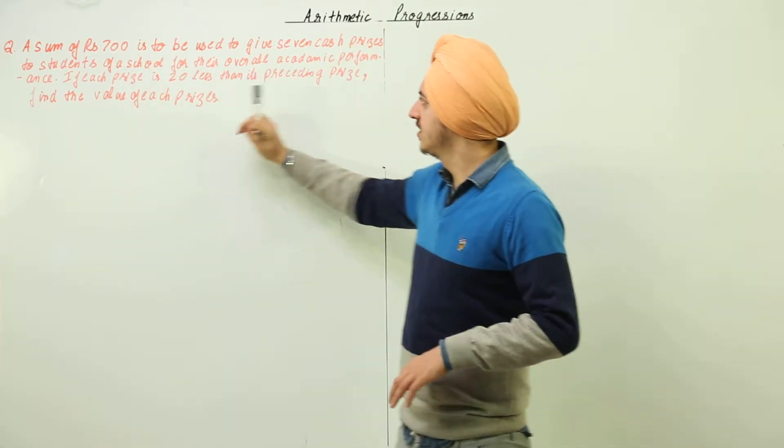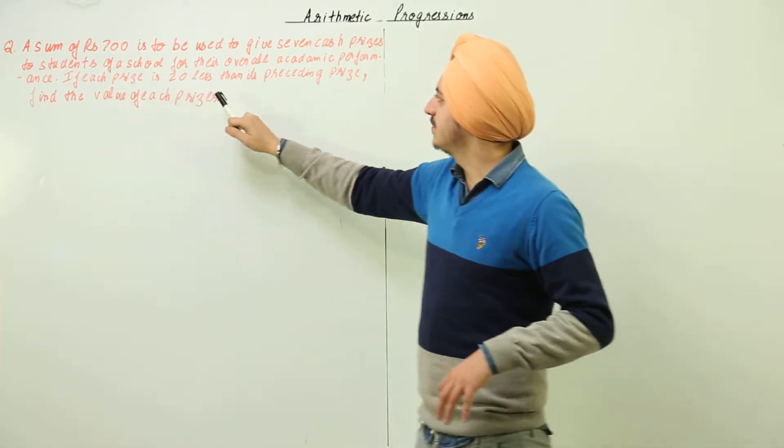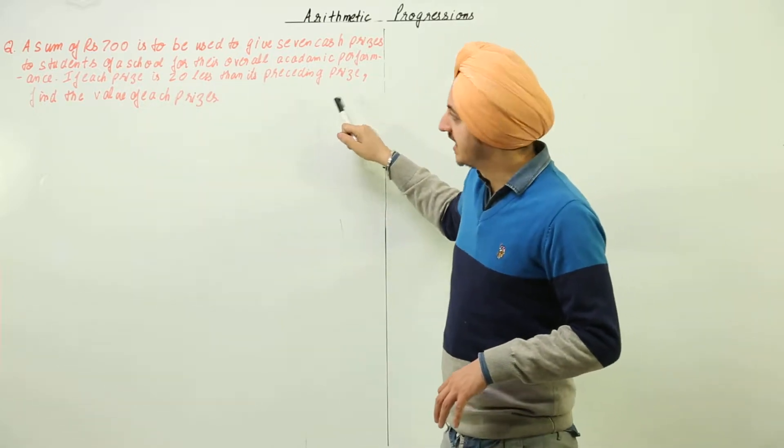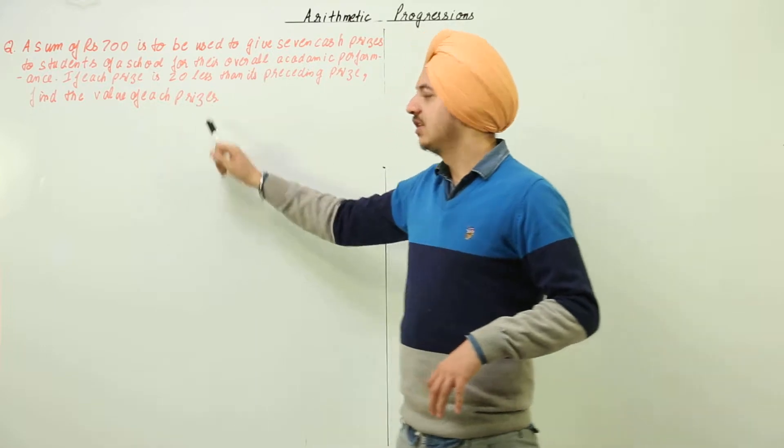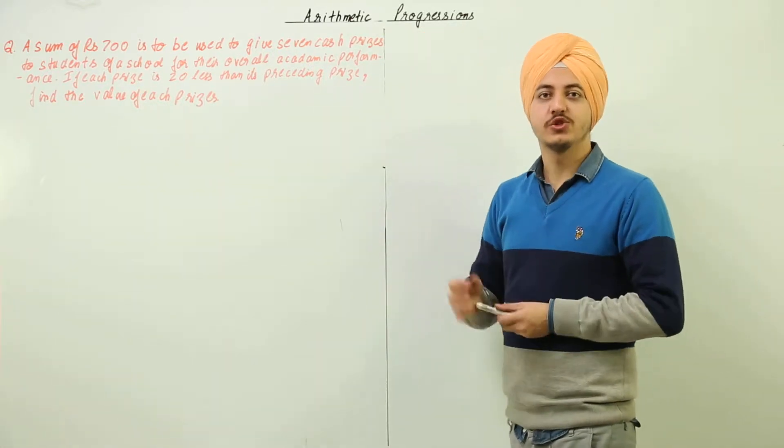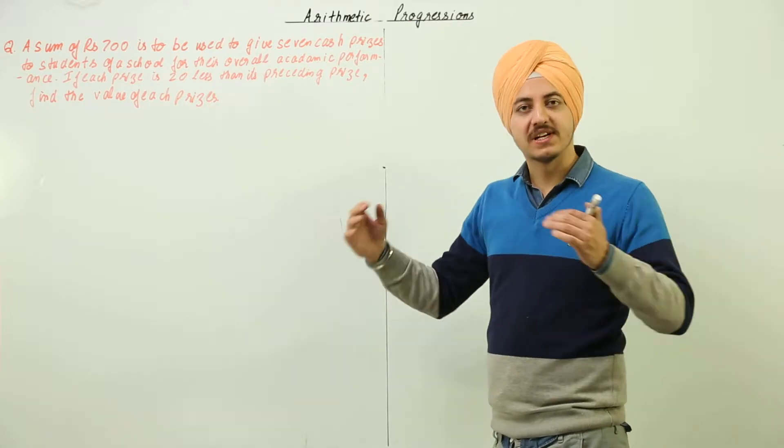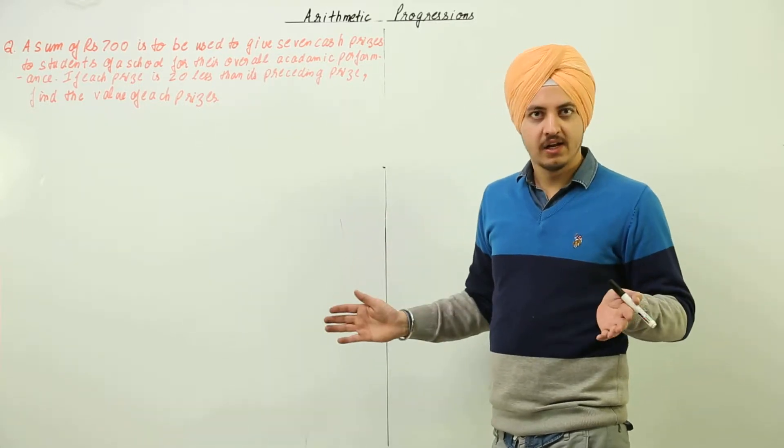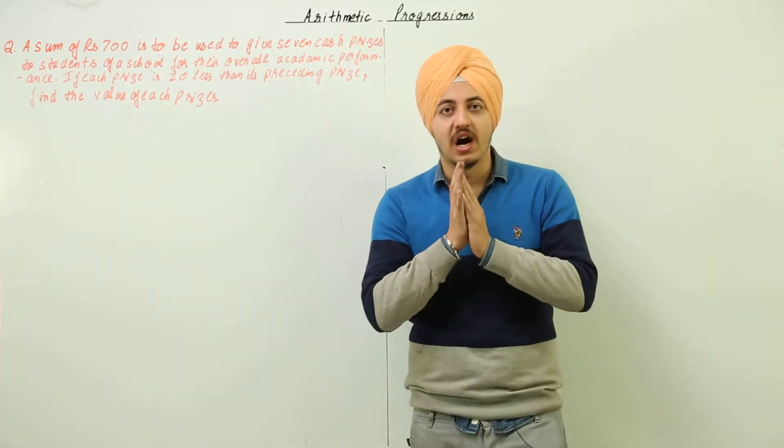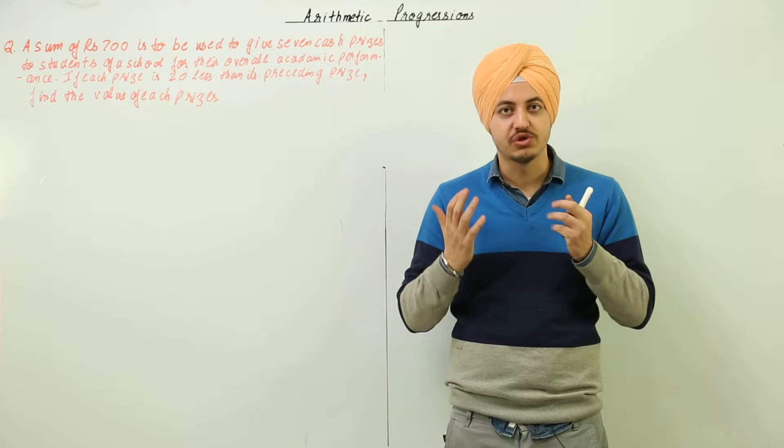If each price is 20 less than its preceding price, then find the value of each prize. Now it is given that each price is 20 less than its preceding price. Now if we assume over here, I will tell you there is first of all you need to understand what the question has to say.